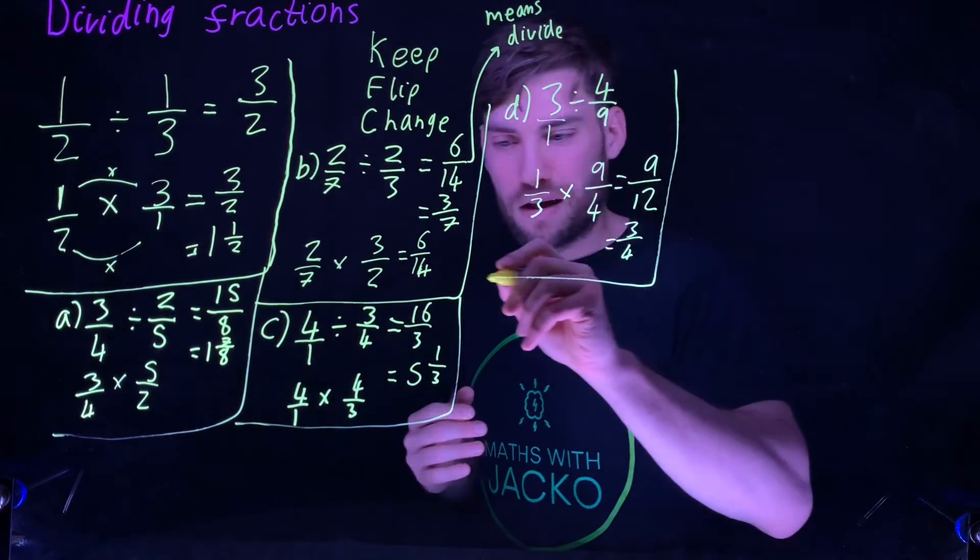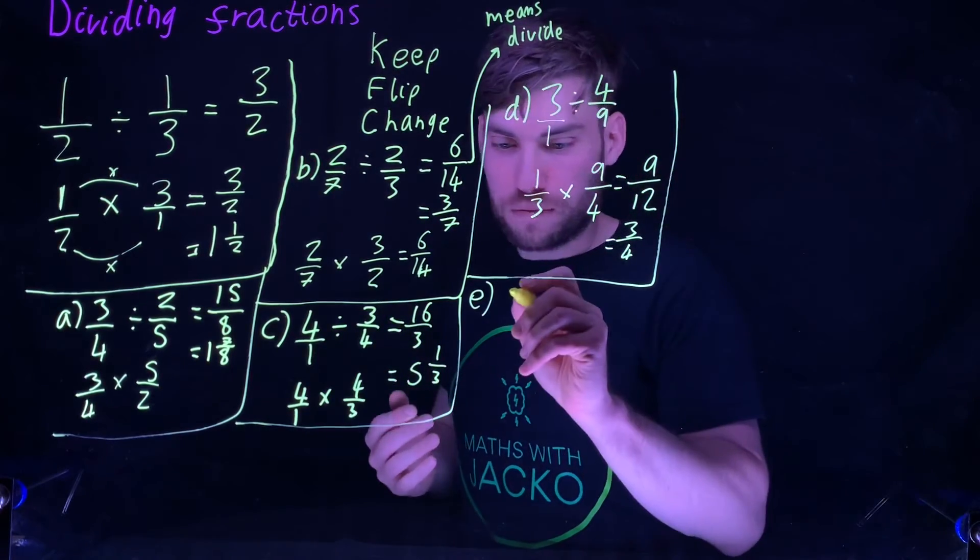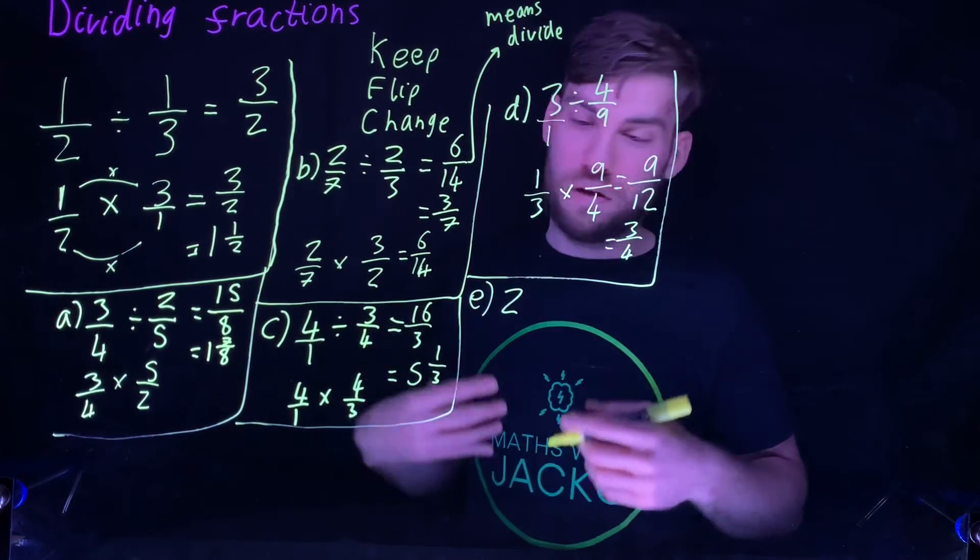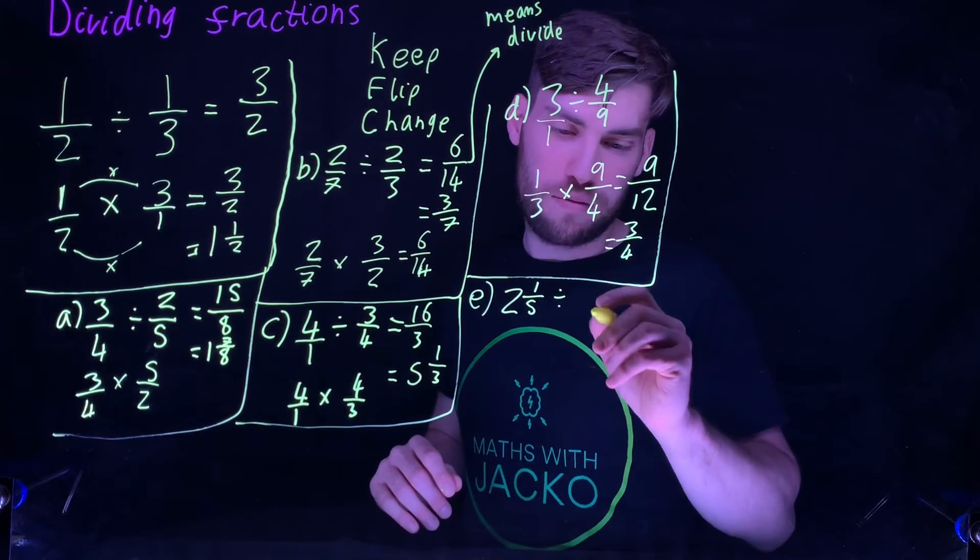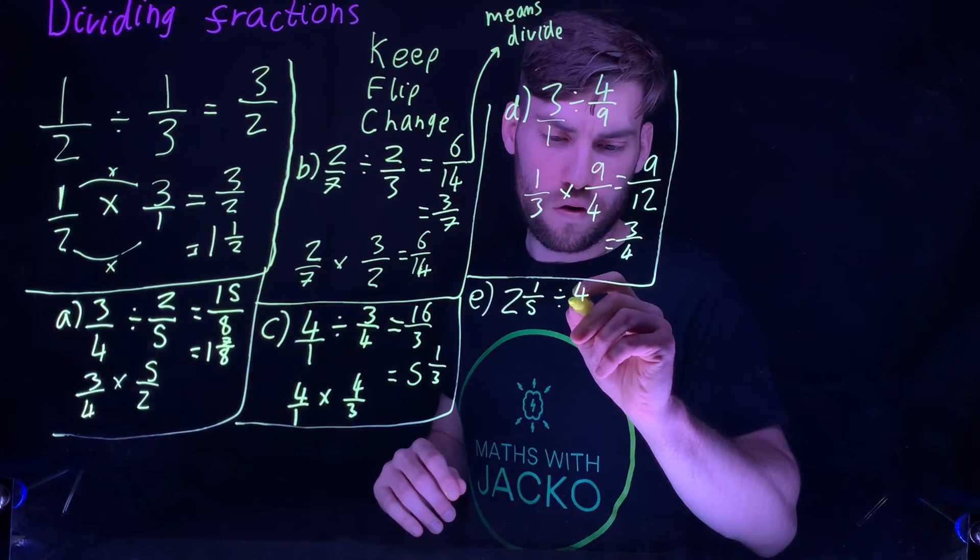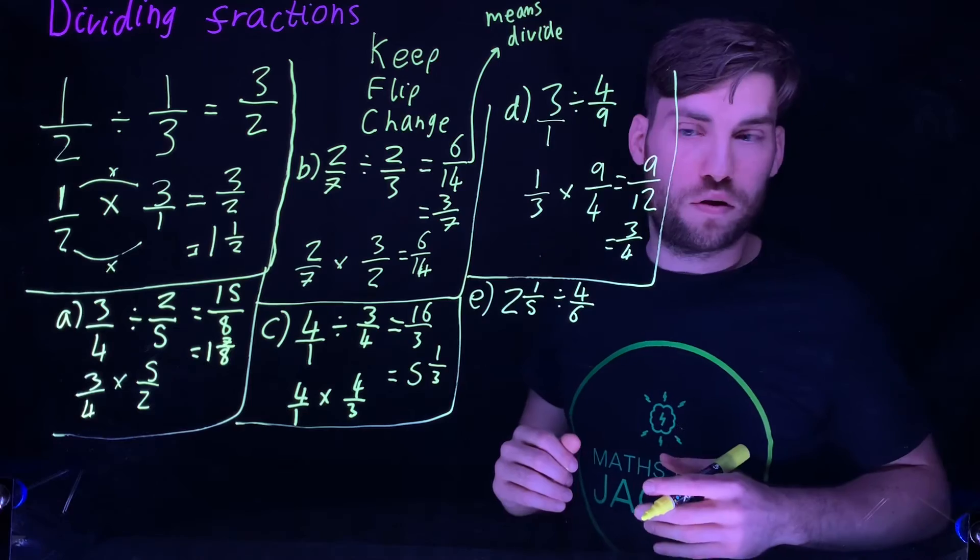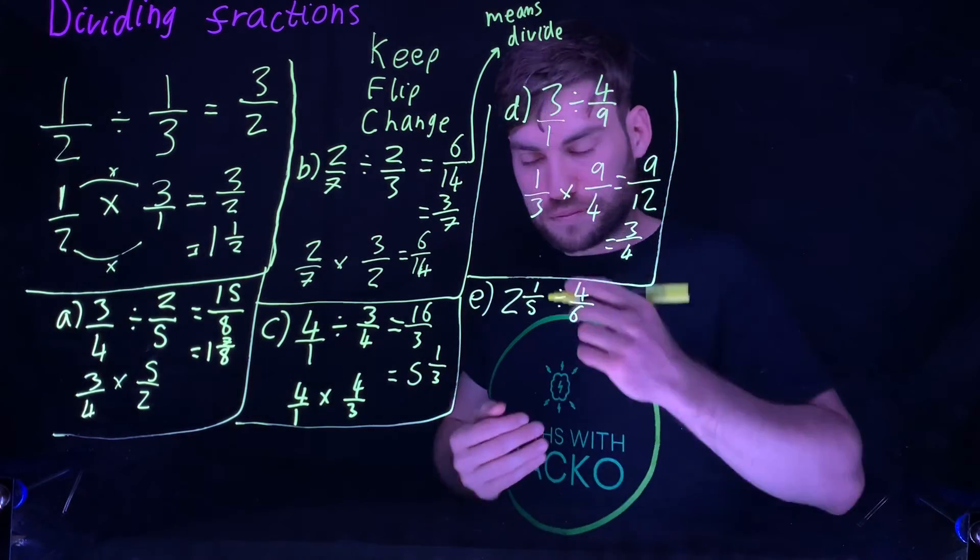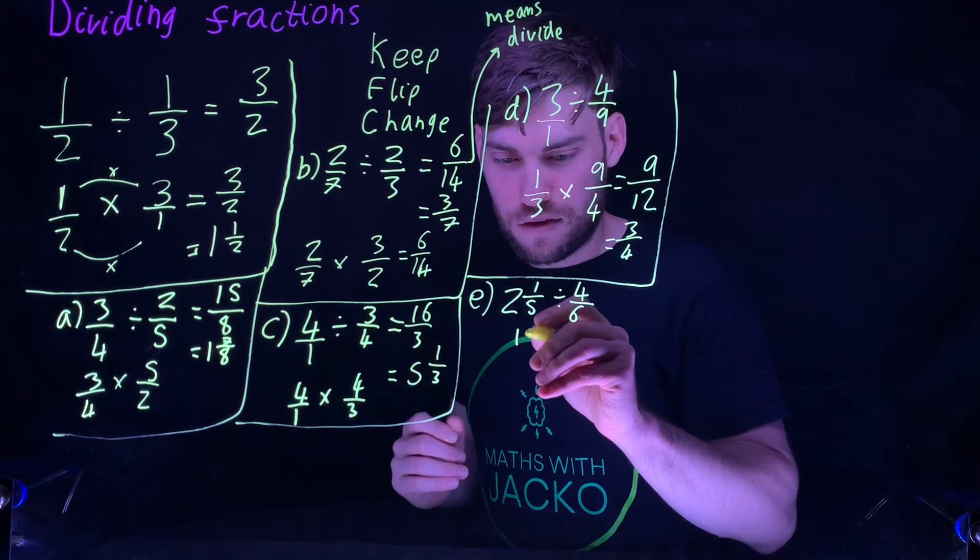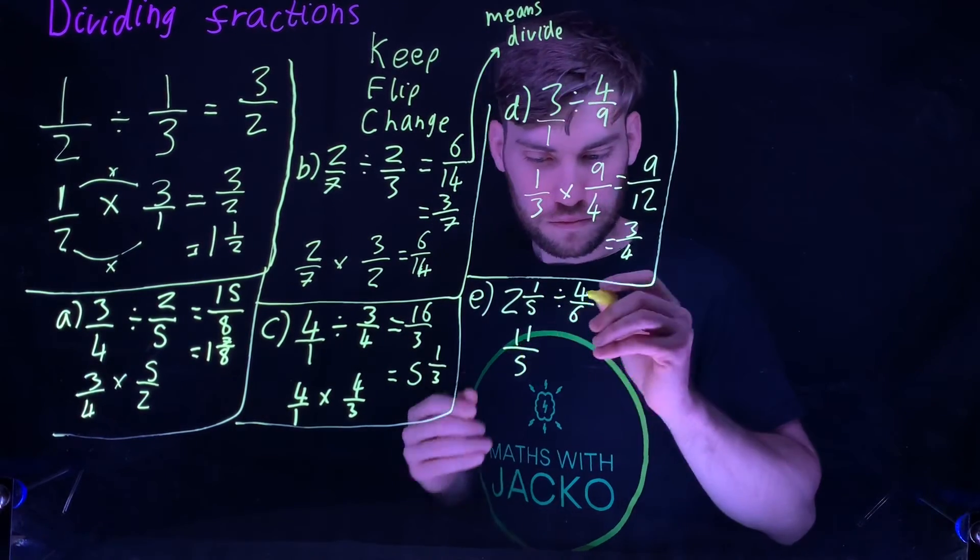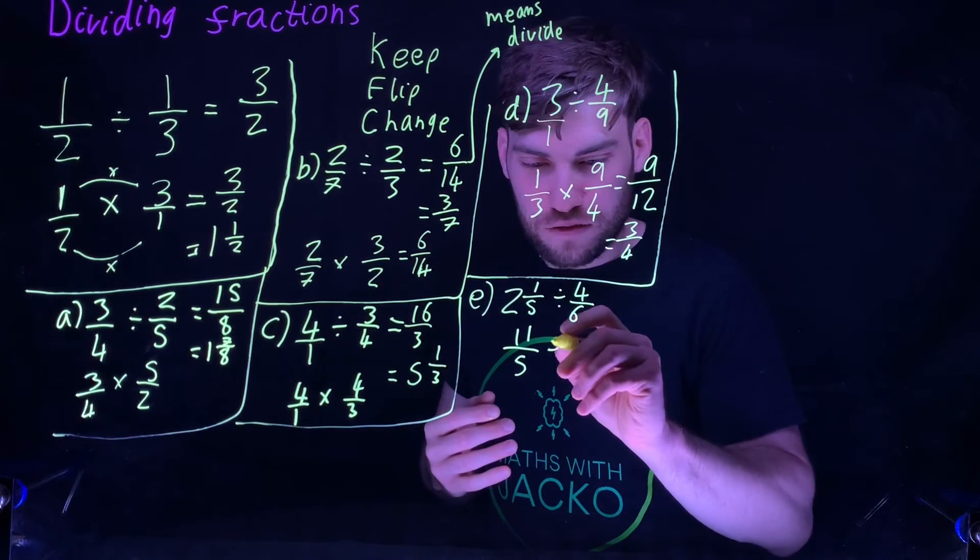Now let's step it up a little bit more. This will be our last one I go through. Let's think you might have a mixed number. These questions come up all the time. Two and one fifth divided by four sixths. Pause the video and have a go at that one. When you see a mixed number, convert it to an improper fraction first. You get eleven fifths.